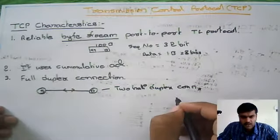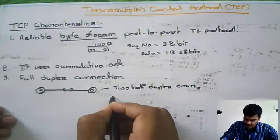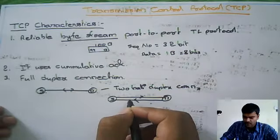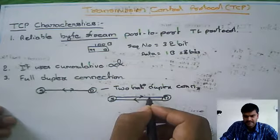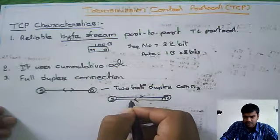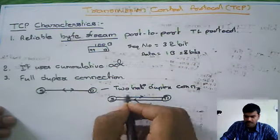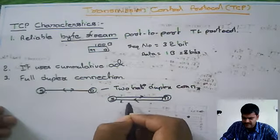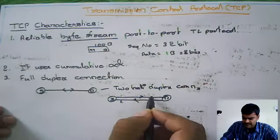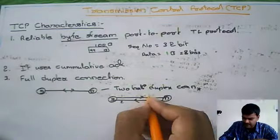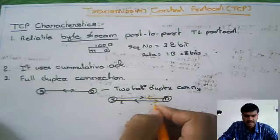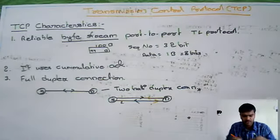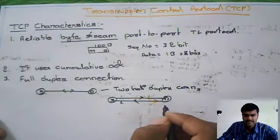It is actually two half duplex connections — source and destination, one direction and the other direction. At the same time on a single connection, both directions simultaneously is not possible. But because of having two connections, overall it appears as full duplex. We can change directions: on connection one you forward data one way, and on connection two you forward data the opposite way. That is why we call it full duplex, but internally it is two half duplex connections.